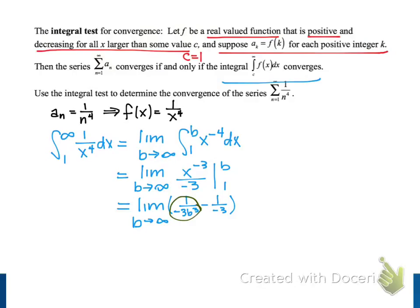It's going to become very large. And that means the whole fraction, 1 over negative 3 b cubed, is going to become very small. And so this part of it will approach 0 as b approaches infinity.